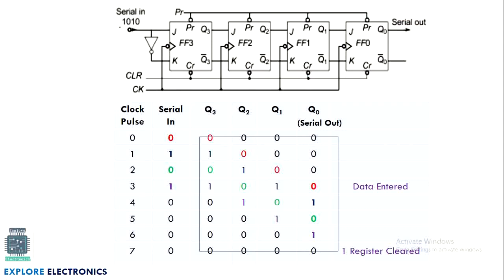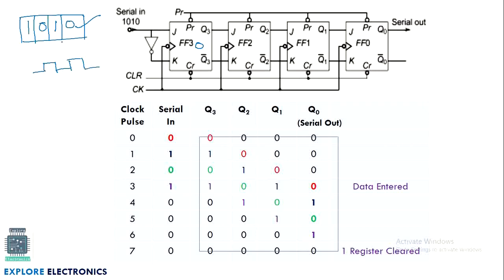We are passing serial data: zero, then one, then zero, then one — four bits over four clock cycles. In the first clock cycle we pass zero, which is stored in the first flip-flop. In the second clock cycle, we pass one. The zero is transferred to the next flip-flop and one is stored in the first flip-flop.